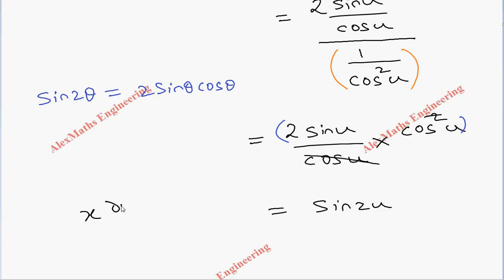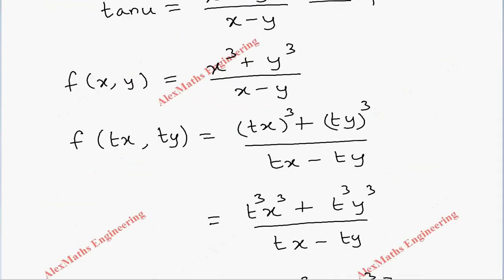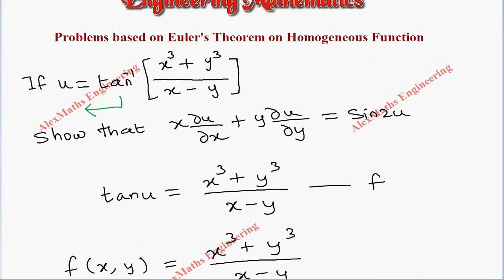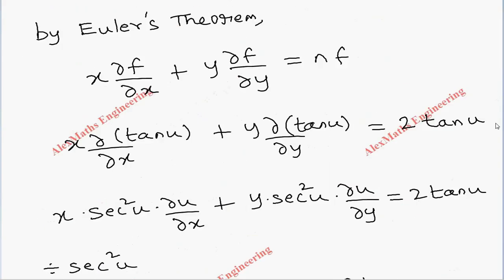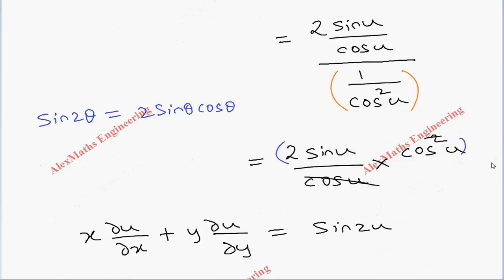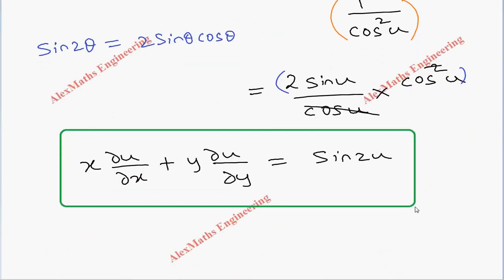So on the other side we have x into ∂u/∂x plus y into ∂u/∂y, which is nothing but sin 2u. So in the question we are going to show that x into ∂u/∂x plus y into ∂u/∂y equal to sin 2u, which we have now proved here using Euler's theorem.